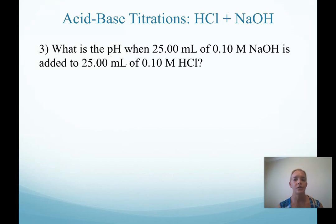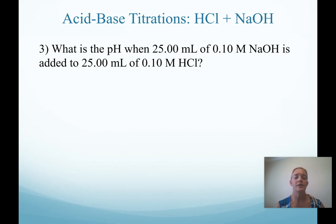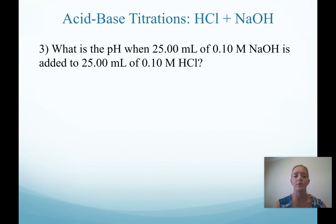To continue with our titration, we are working with HCl and NaOH. We are now at point 0.3 in our titration, and we want to know the pH when we add 25 milliliters of 0.10 molar NaOH to 25 milliliters of 0.10 molar HCl. It is helpful to set up a change table here if you don't recognize where you are in a titration — that's always a viable option for starting.